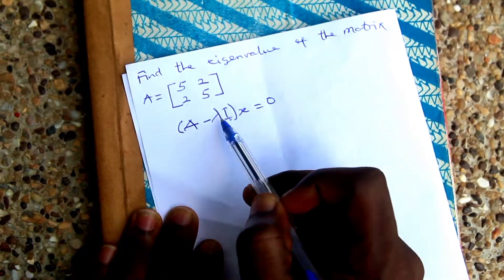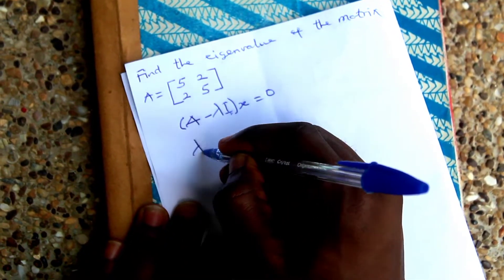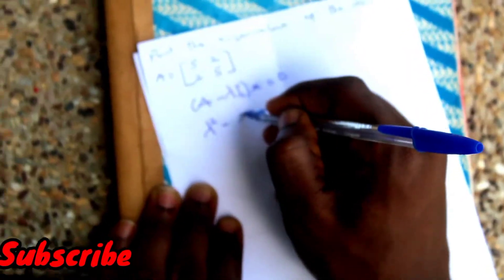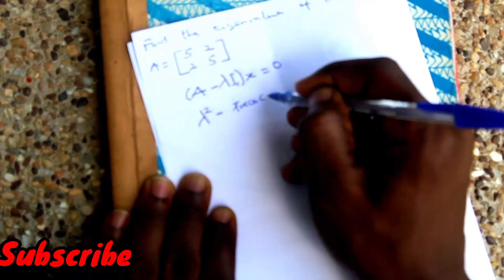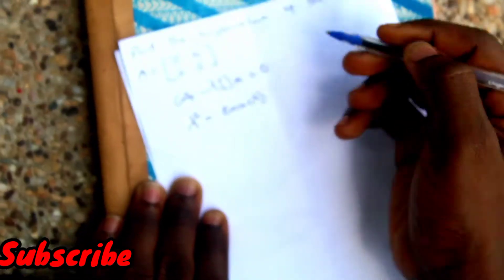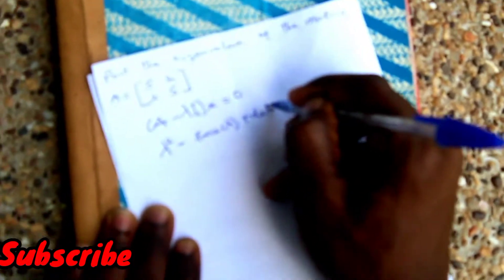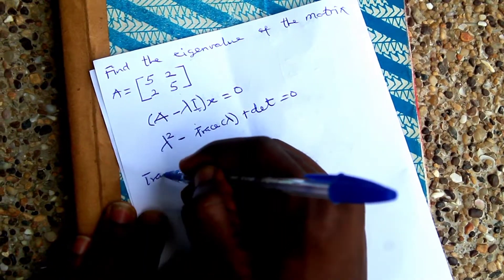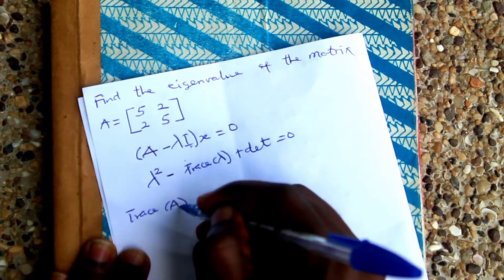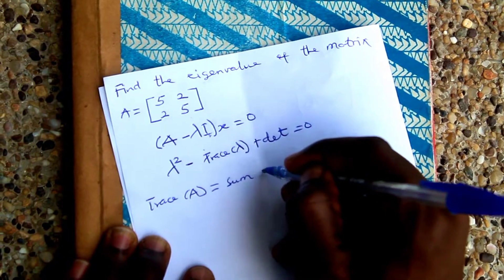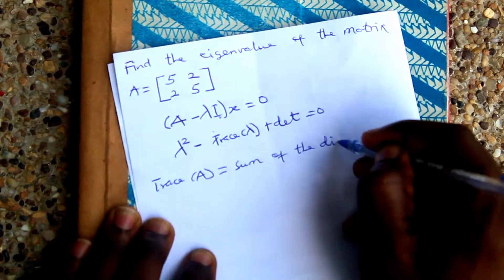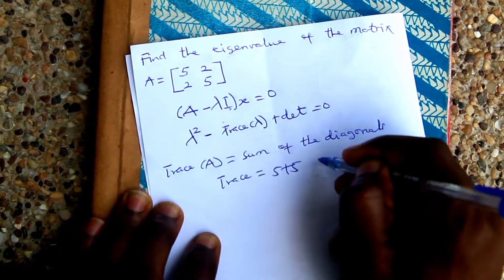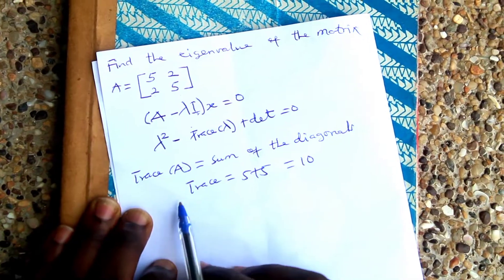The short way is that the characteristic equation is lambda squared minus the trace multiplied by lambda plus the determinant equals zero. The trace of matrix A equals the sum of the diagonal elements.